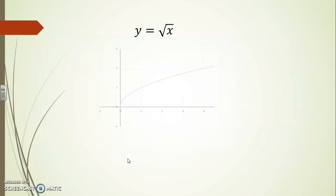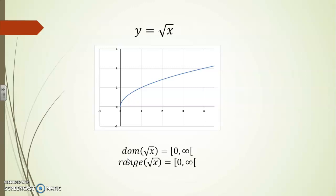y equals square root of x has a more limited domain as you can notice. Only values of x that are 0 or more can be used to calculate the root of x. Also square root functions can only produce positive or 0 outcomes which explains the range going from 0 inclusively to infinity.